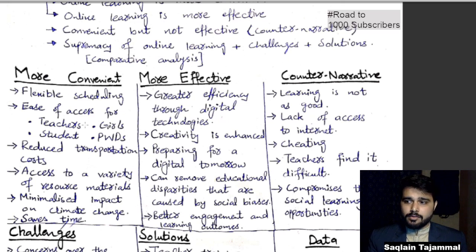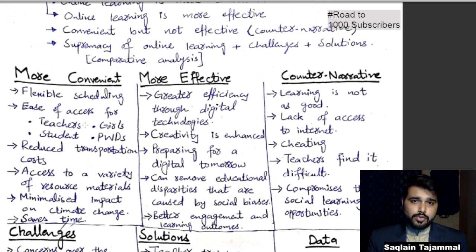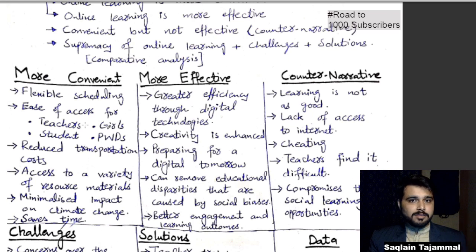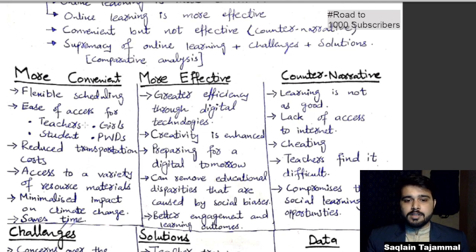You can participate in a digital future — the future is digital, and you all know that. So you start preparing for it. Online learning helps you start that preparation. It can also remove educational disparities that are caused by social biases.